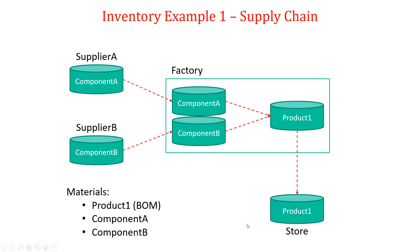Looking at this structure, we need the following inventories. We have a Product One inventory at the store, where customers come in and buy units pulled from that store inventory. We also have an inventory of the product at the factory, which replenishes the supply to the store. When the Product One inventory reaches the reorder point, we use Component A and Component B to assemble more products — an assembly operation rather than a supplier replenishment. We then replenish Component A from Supplier A and Component B from Supplier B. So we have three different materials: Product One, specified as a bill of materials, and then Component A and Component B.